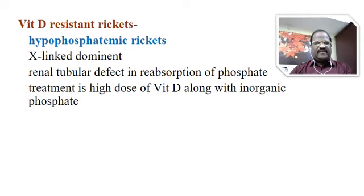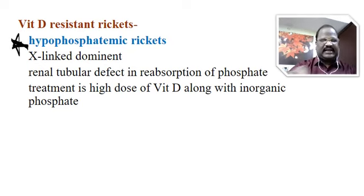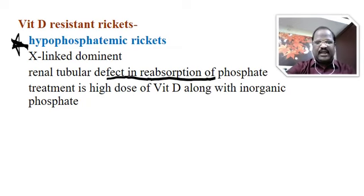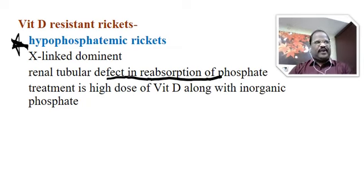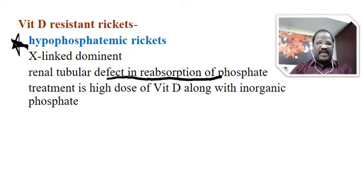We also have an important type called vitamin D-resistant rickets. Here the problem is increased phosphate excretion. This is called hypophosphatemic rickets — it is an X-linked dominant disorder. The pathology is a defect in reabsorption of phosphate from the urine, causing increased phosphaturia. For this, treatment is high-dose vitamin D along with inorganic phosphate.